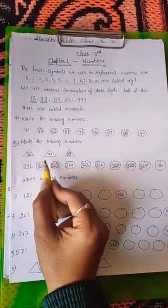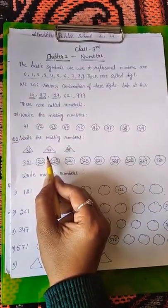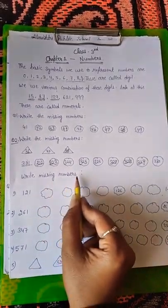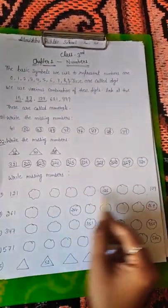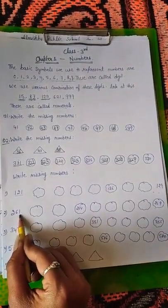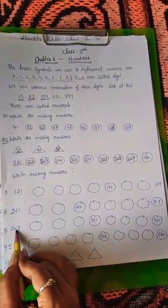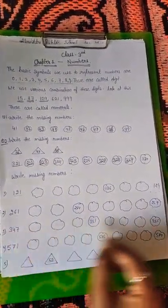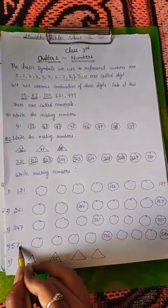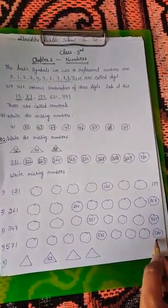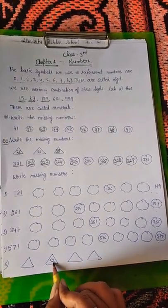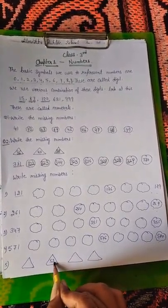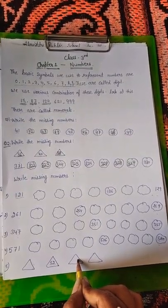So students today's class is over and you have given homework here. Find the missing numbers between 121 and 129, 261 and 269, 341, 347 and 355, 571 and 580. You also find what comes before 52 and what comes after 52. Okay, thank you.